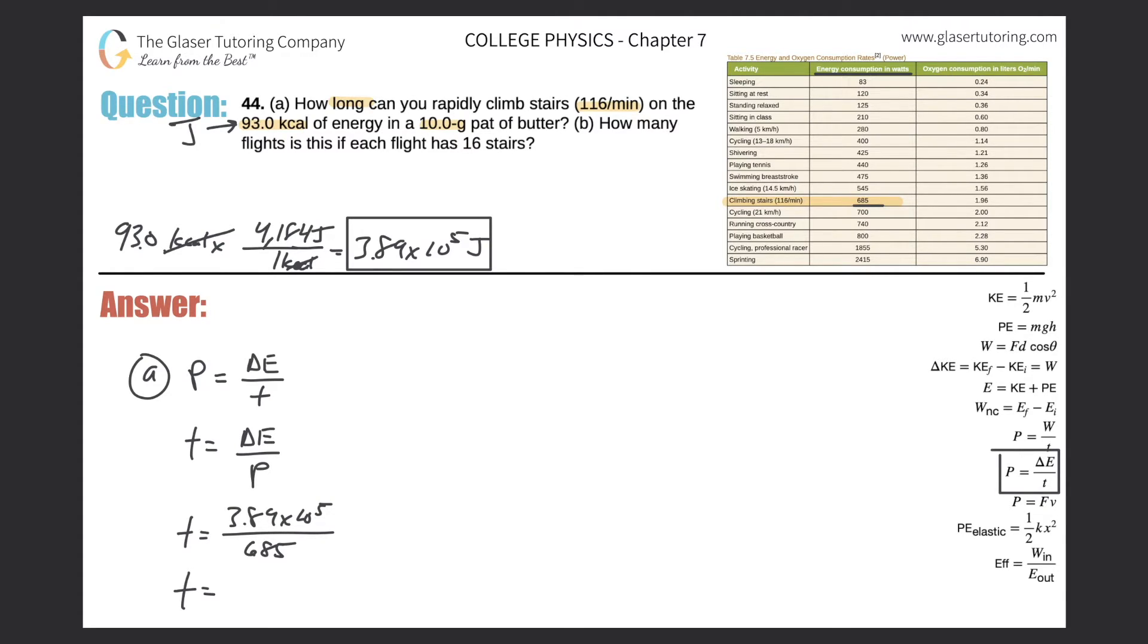So time is equal to 3.89 times 10 to the 5. That's the energy. And the power was 685 watts. Great. So just simply do the division. Let's see what we get. 3.89 times 10 to the 5 divided by 685. So we've got a value. It's a decimal, but I'm going to round up. So 568. And that will be in terms of seconds. So this is how many seconds we can perform this stair climbing activity. So we can do this for 568 seconds. Let's move on to letter B.